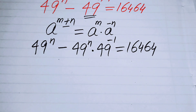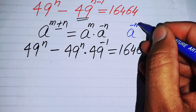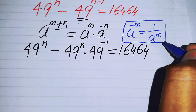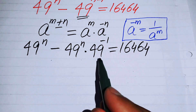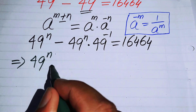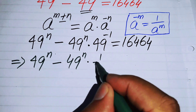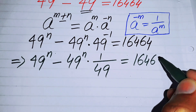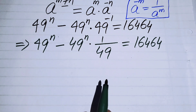Next, we use another exponential law: a to the power of minus m equals 1 over a to the power of m. Applying this law, we rewrite the expression as 49^n minus 49^n times 1 over 49 equals 16464.